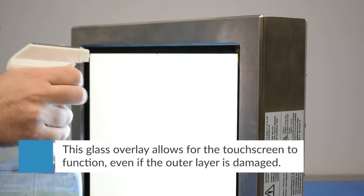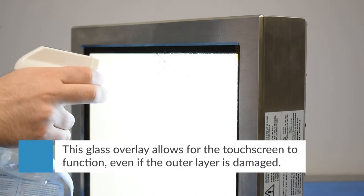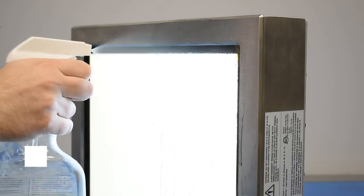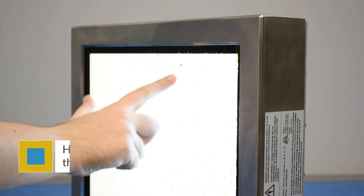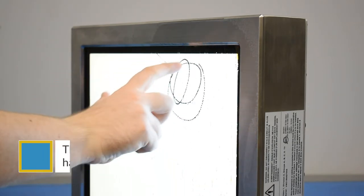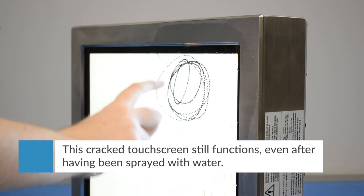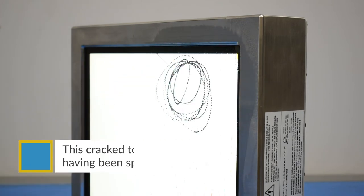This glass overlay allows for the touchscreen to function even if the outer layer is damaged. Here we have a PCAP touch panel with a glass overlay that is cracked. As you can see, this cracked touchscreen still functions even after having been sprayed with water.